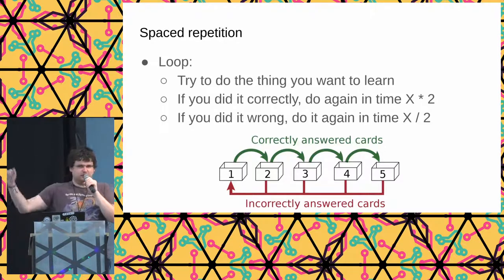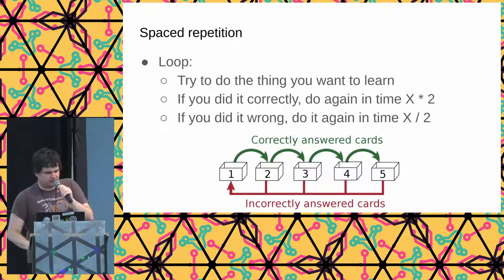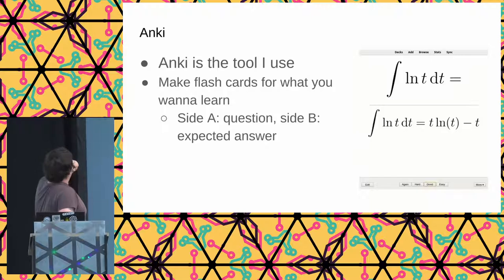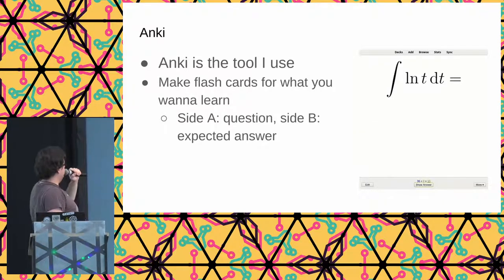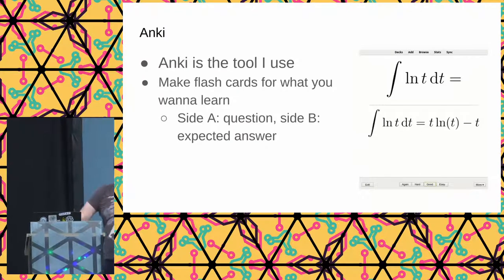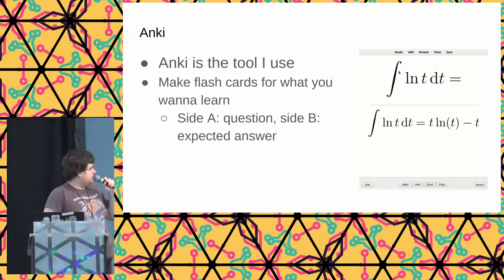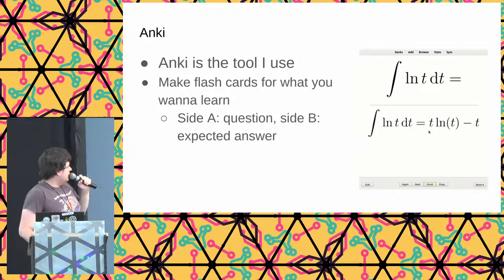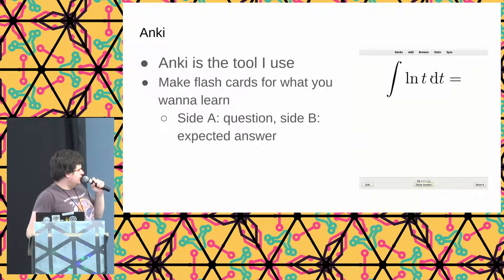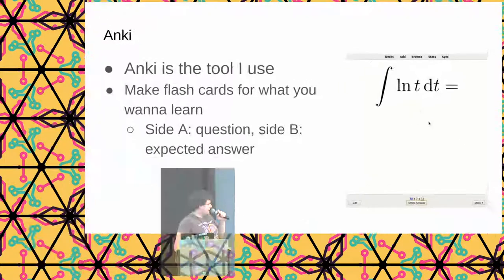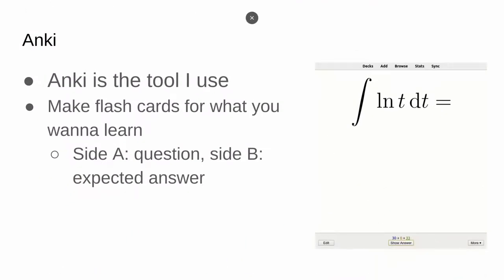If you didn't do it correctly, you try it again after a shorter interval — typically done exponentially, so the interval is either multiplied or divided by a constant. Anki is an open source tool used to make these flashcards. A flashcard has a question — like 'what is the integral of the logarithm of t dt?' — you try to remember the answer, press 'show answer', and then rate how easy or hard it was. It's a software implementation of this algorithm.